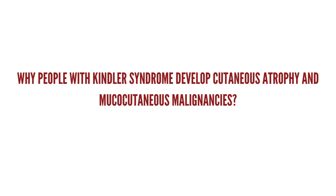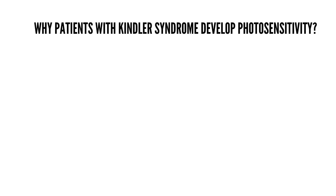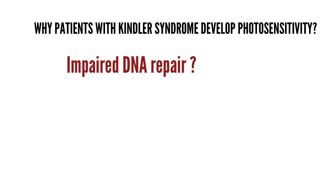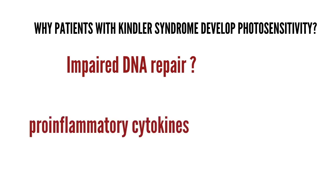Why do patients with Kindler syndrome have cutaneous atrophy and increased risk of malignancy? Kindlin-1 also has a role in cutaneous epithelial stem cell homeostasis. Loss of kindlin-1 protein leads to an increased risk of skin cancers as well as cutaneous atrophy due to stem cell exhaustion and premature death of keratinocytes. As for photosensitivity, there is some impairment of DNA repair due to FERMT1 mutation. Additionally, pro-inflammatory cytokines are increased in Kindler syndrome skin following UVB radiation, leading to increased reactive oxygen species and oxidative stress.